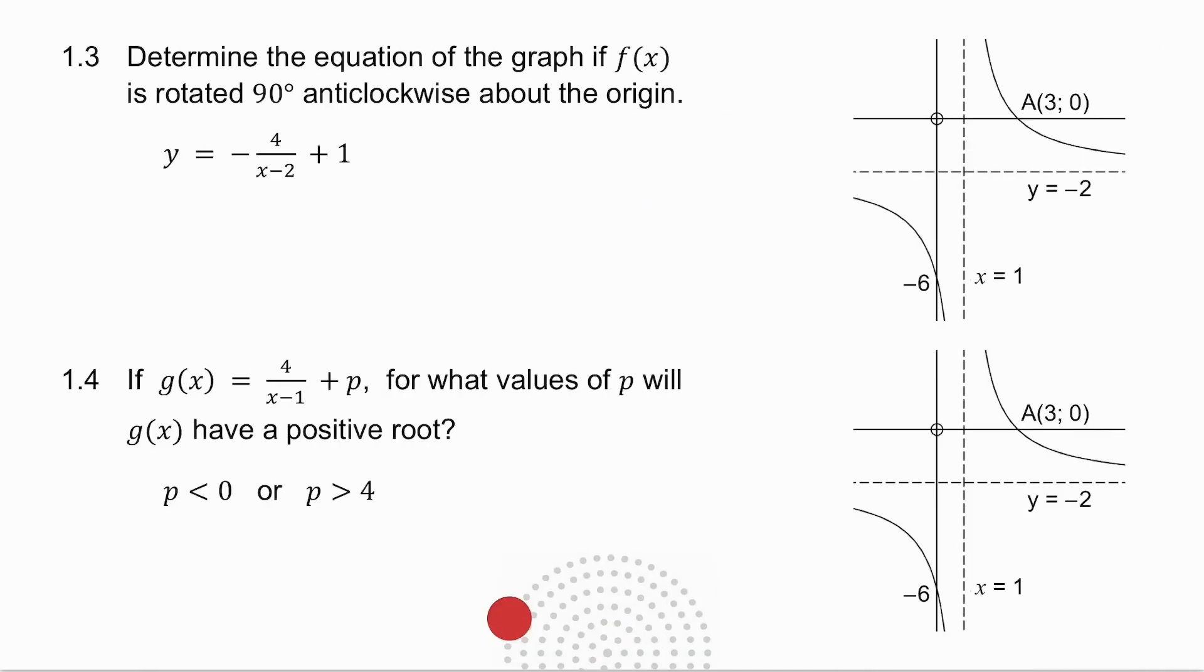In 1.3, I ask you to determine the equation of f if it is rotated 90 degrees anticlockwise about the origin. So what I get is as follows. This asymptote, y equals minus 2. If I go from the origin to the asymptote and rotate 90 degrees anticlockwise, it ends up there. So that asymptote is x equals 2, which means in my fraction, I divide by x minus 2. My other asymptote is at x equals 1. If I go from the origin to it and rotate 90 degrees anticlockwise, it ends up there, at y equals 1.